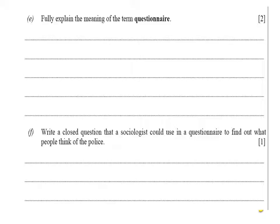Your second question: write a closed question that a sociologist could use in a questionnaire to find out what people think of the police. A closed question refers to an answer such as yes or no. So, for example: 'Do you think the police do a good job in our community?' That would be one mark and would be an example of a closed question.